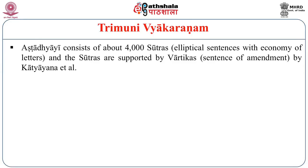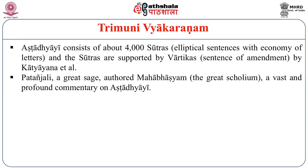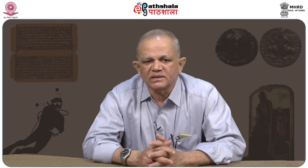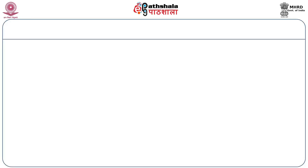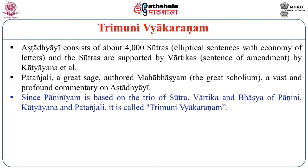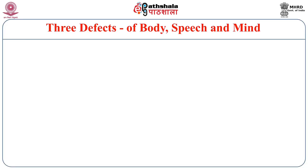Ashtadhyayi consists of four thousand Sutras — elliptical sentences with economy of letters. The Sutras are supported by Vartikas (sentences of amendment) by Kacayana et al. Patanjali, a great sage, authored Mahabhashyam — the great Bhashyam, a vast and profound commentary on Ashtadhyayi. Since Panini's grammar is based on the trio of Sutra, Vartika, and Bhashya by Panini, Kacayana and Patanjali respectively, it is called Trimunu Vyakaranam — grammar of the three sages.